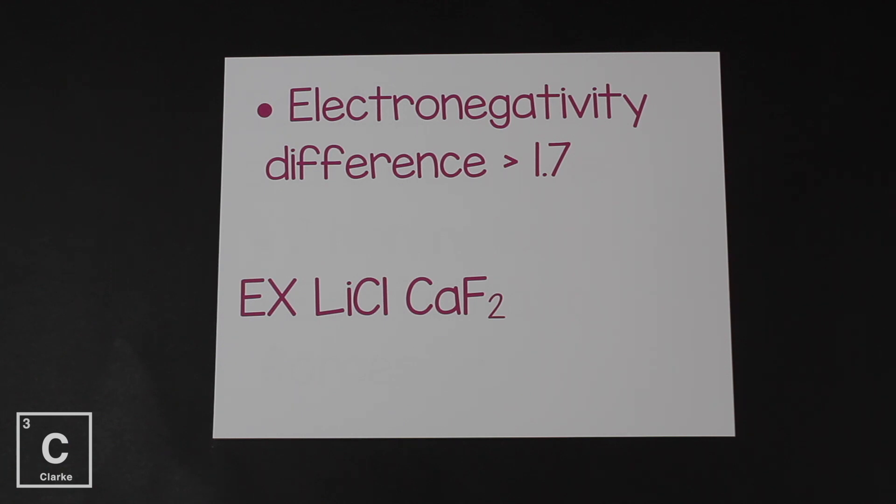Now if we were looking at an electronegativity chart and we took two elements and we subtracted them to get the difference, if the number was 1.7 or larger, we could classify this as an ionic bond.